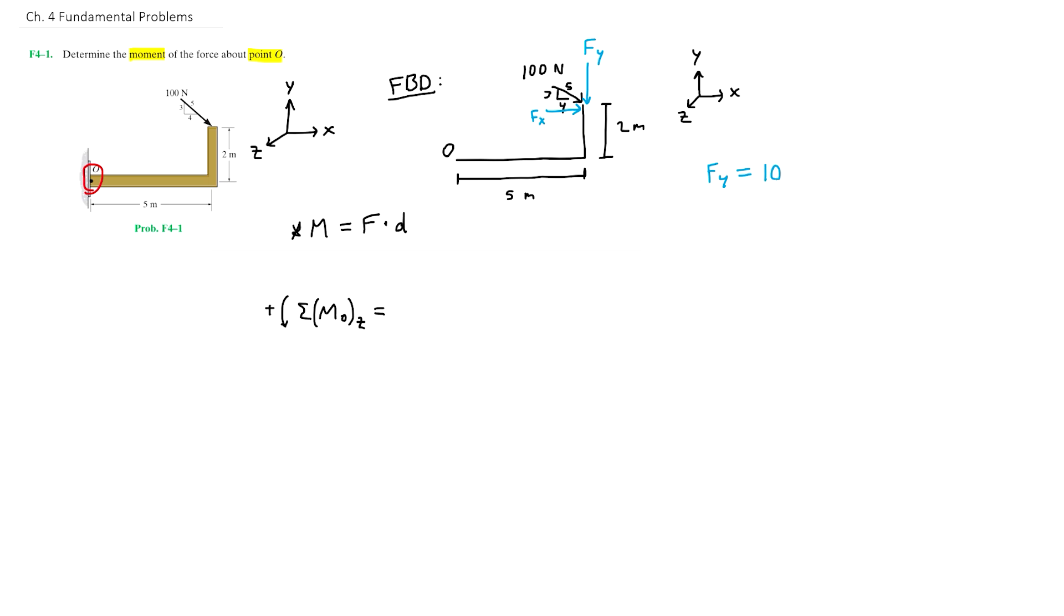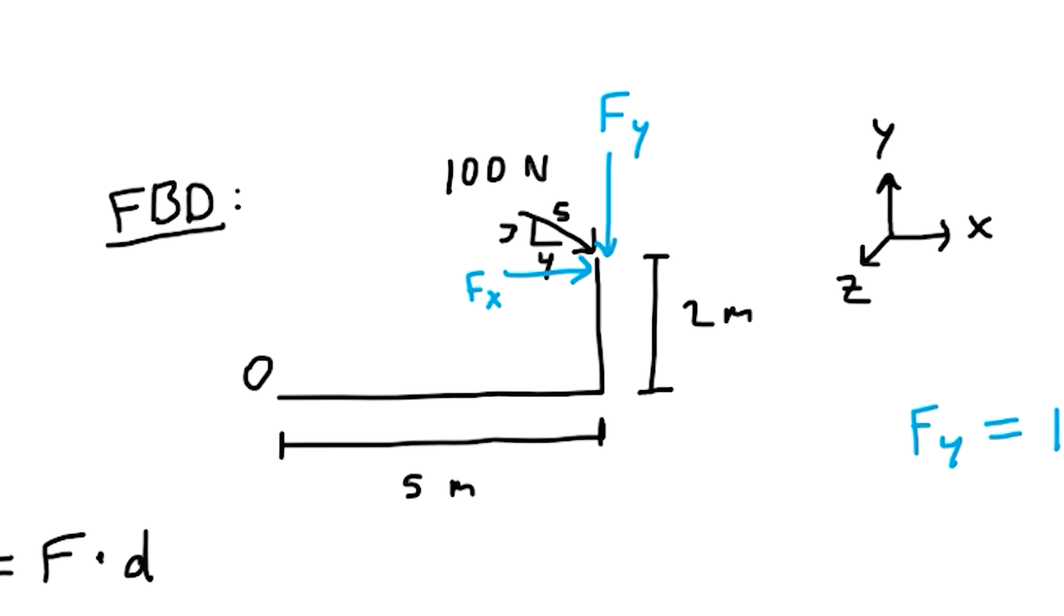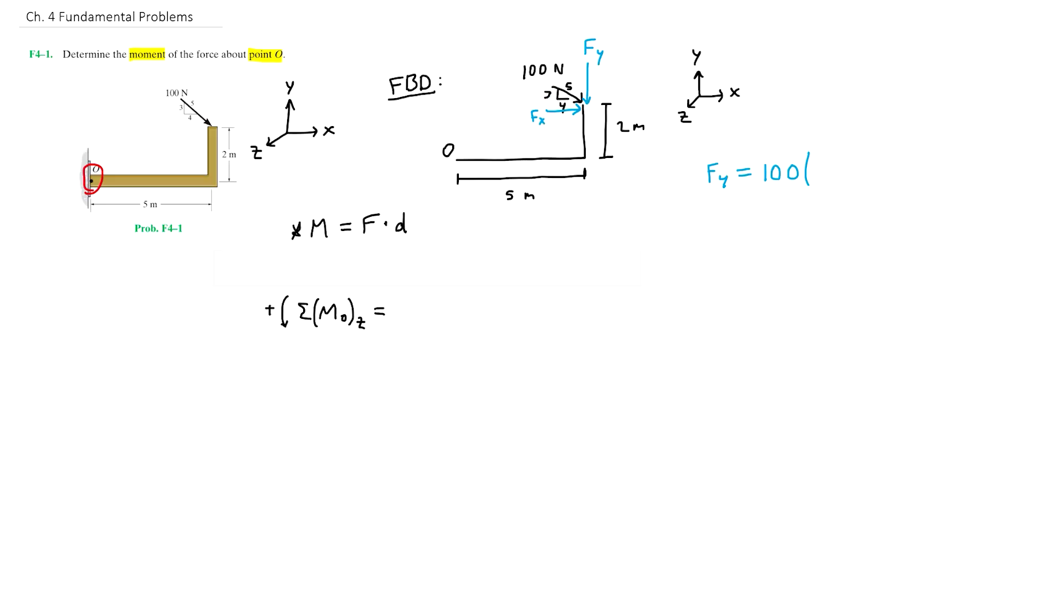The 100 newtons times—remember the shortcut for the proportions here is to simply look at the side of the triangle that is parallel to the component you're trying to find. In this case it is side 3, and that'll be 3 over the hypotenuse which is 5. So then Fy is equal to 100 times 3 over 5.